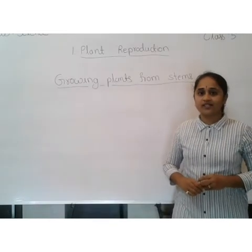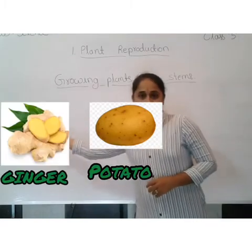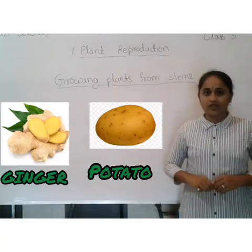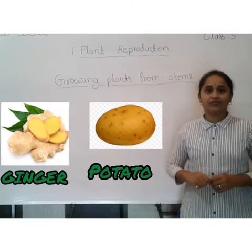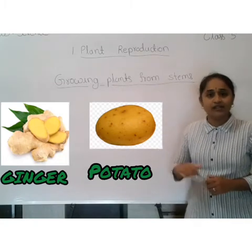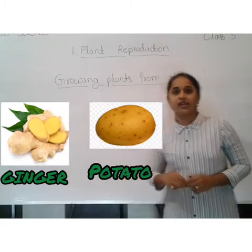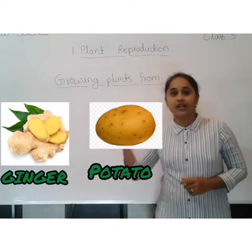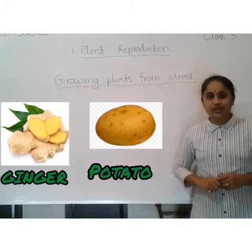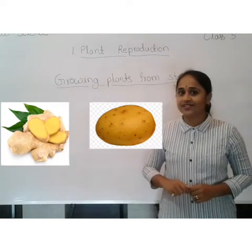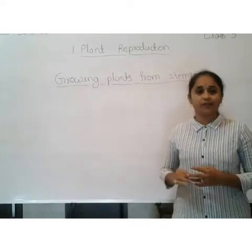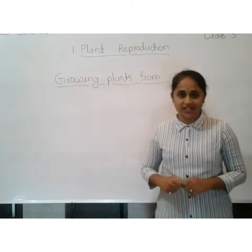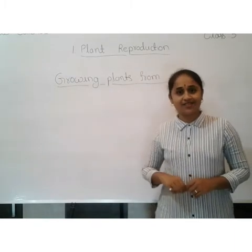Some plants such as potato and ginger can reproduce from a stem which grows underground. It has buds called eyes on its surface. Any piece of a potato with an eye can grow into a new plant. Money plant can grow into a new plant with the stem cutting of a mother plant.